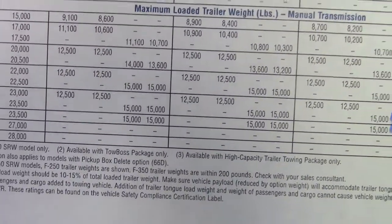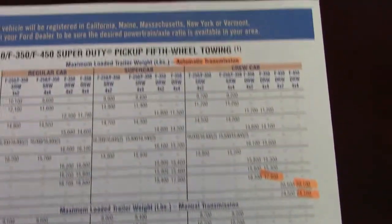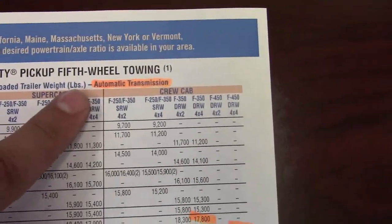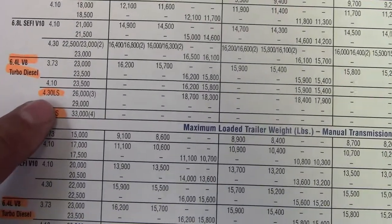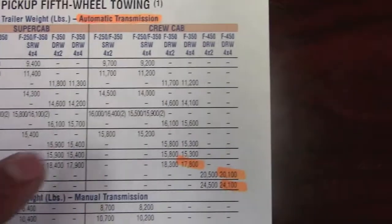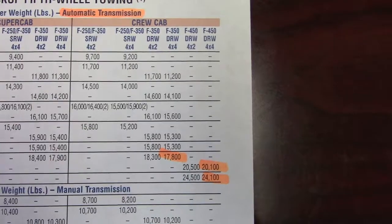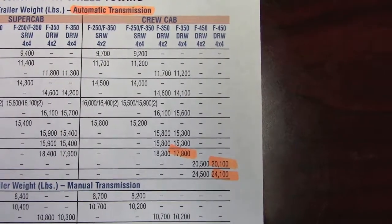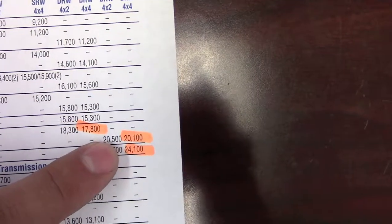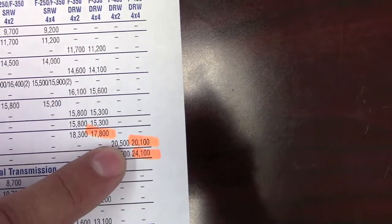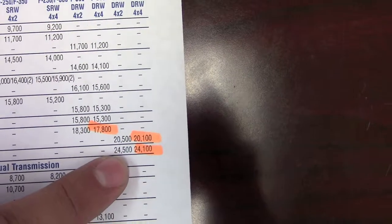The interesting part is when you come over to fifth wheel towing. For an automatic transmission 6.4 crew cab, it's 17,800 pounds — that's with the max towing 4.30 LS. If you go with a 4.10 or 3.73, you're only at 15,300, so you only gain 300 pounds of towing capacity with 3.73 or 4.10 gearing in the 350 configuration. On the 450 with either a 4.88 or 4.30 LS, you get much higher numbers: 20,100 pounds on the 4.30 limited slip and 24,100 pounds on the 4.88 limited slip.